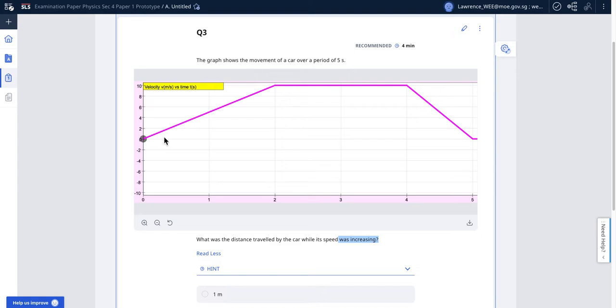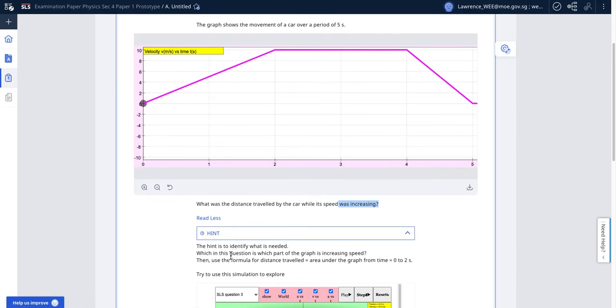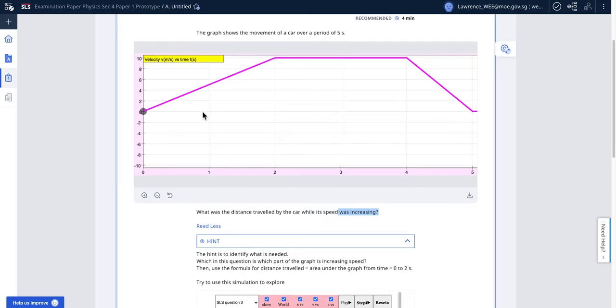The trick is you have to look at the hint to identify what is needed. Once you identify this, then the question is what part of the graph is increasing.